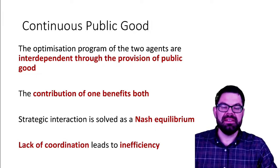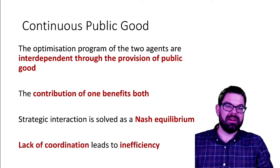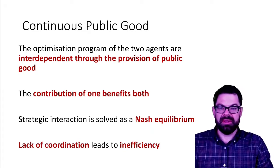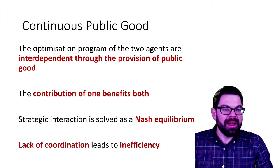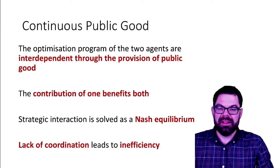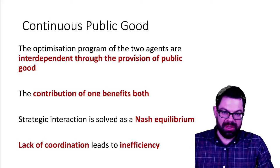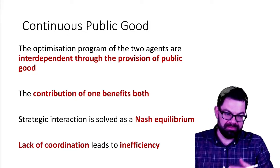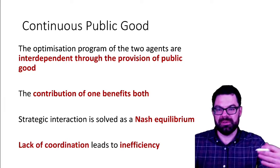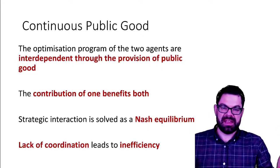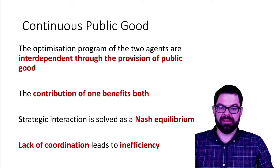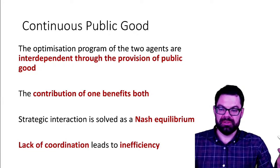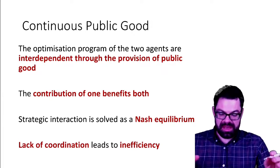In reality you very often have public goods where provision is continuous. Think about police or a fire brigade — that is typically a public good that is continuous. We're not debating whether we're going to have a police force or not, but rather how much police presence there is, or if you consider the public good to be safety, how safe we want the place to be and how much we're willing to contribute to that.